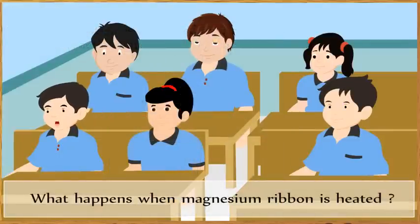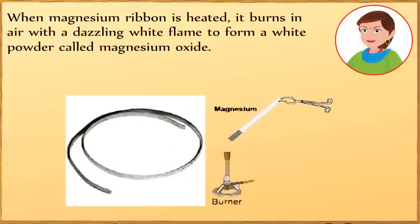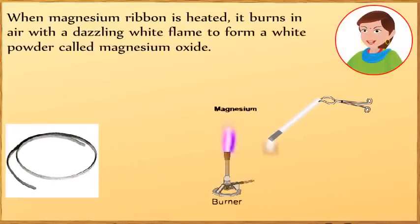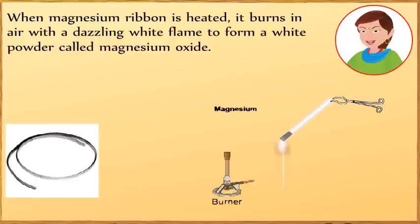What happens when magnesium ribbon is heated? When magnesium ribbon is heated, it burns in the air with a dazzling white flame to form a white powder called magnesium oxide.